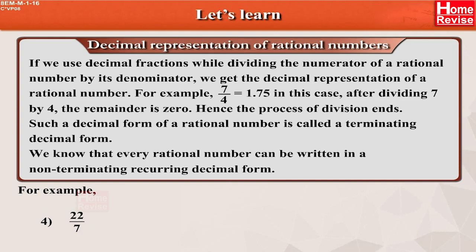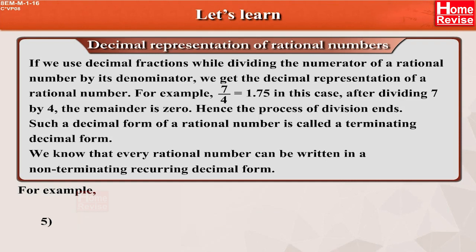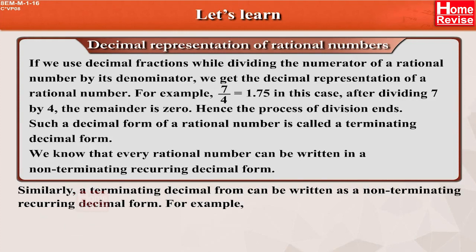22 upon 7 is equal to 3.142857... which is equal to 3.142857 recurring. 23 upon 99 is equal to 0.2323... which is equal to 0.2323 recurring. Similarly, a terminating decimal form can be written as a non-terminating recurring decimal form. For example, 7 upon 4 is equal to 1.75 is equal to 1.75000... which is equal to 1.750 recurring.